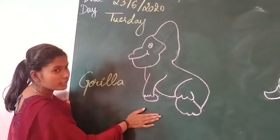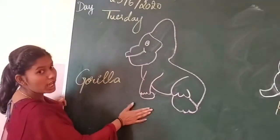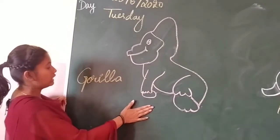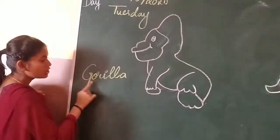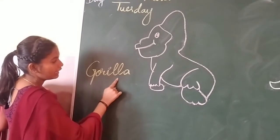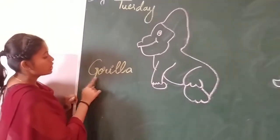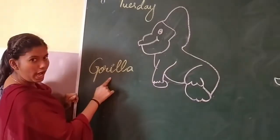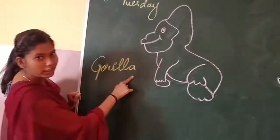Do you know what is this? This is a gorilla. Gorilla is very intelligent. Shall we spell gorilla? G-O-R-I-L-L-A, gorilla.